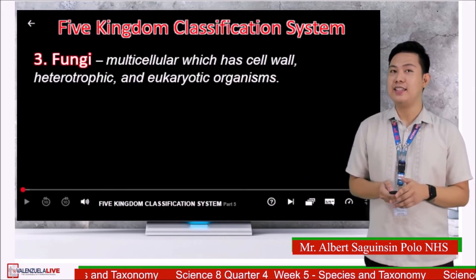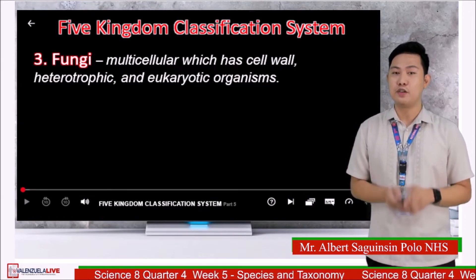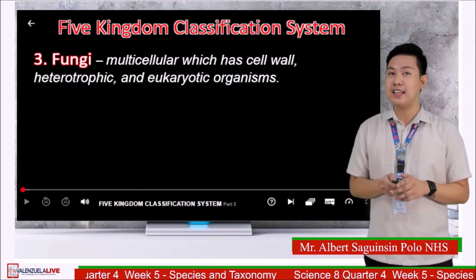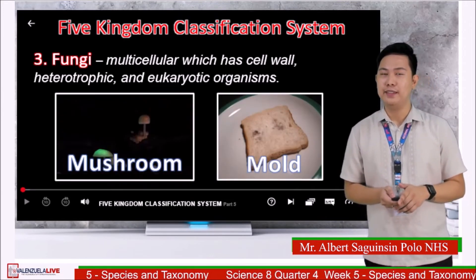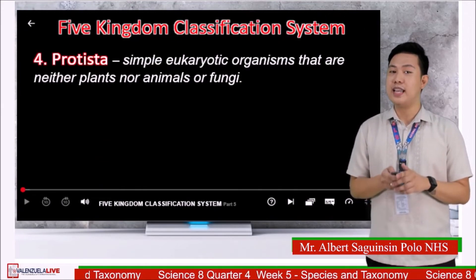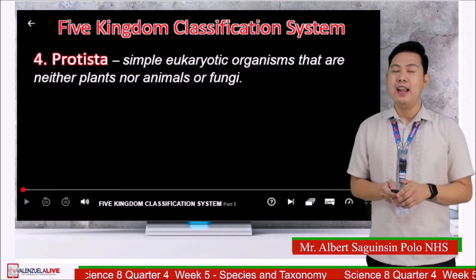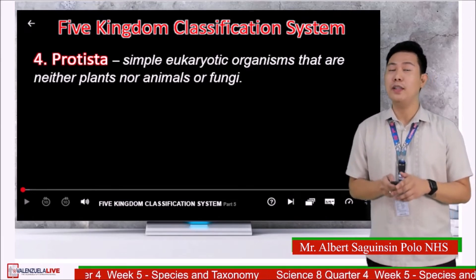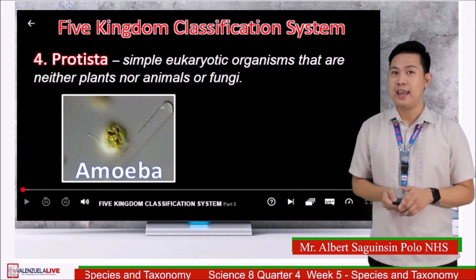Next is kingdom Fungi — organisms that are multicellular and heterotrophic, feeding on decaying matter, with eukaryotic cells that have a cell wall. Examples are mushroom and bread mold. Fourth is kingdom Protista — simple eukaryotic organisms; some are unicellular while some are multicellular. They are neither plant, animal, nor fungi, and are sometimes called plant-like, animal-like, or fungus-like. Examples are amoeba and algae.